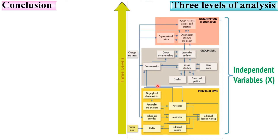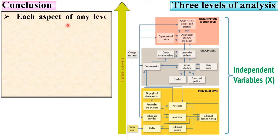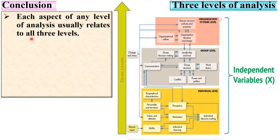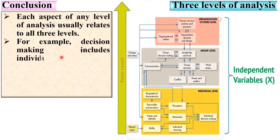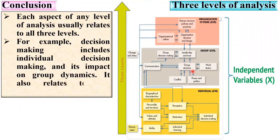This is actually the summary of the three levels: individual level, group level, and organization level. Each aspect of any level usually relates to all three levels. For example, decision making includes individual decision making and its impact on group dynamics, and it also relates to organizational structure. If you have any doubt, write in the comment box. Thanks for watching this video — please press the like button to appreciate it.